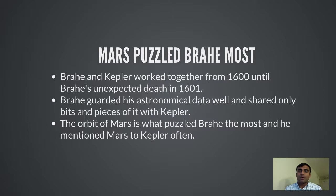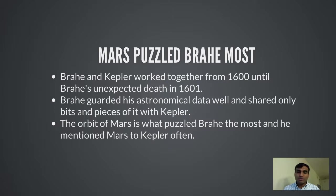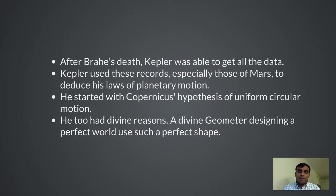During his observations, the planet that confused Brahe most was Mars. Mars does its slow loop-de-loop and retrograde motion in the night sky — all planets do that — but Mars's orbit confused Brahe the most, and he mentioned it to Kepler most often. They collaborated for about two years until the death of Tycho Brahe. After Brahe's death, Kepler was able to get all the data that Tycho Brahe had, and he used it to deduce his laws.